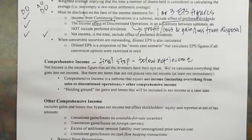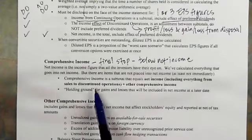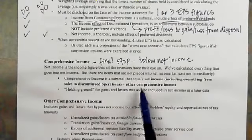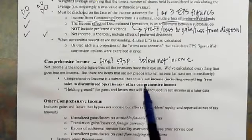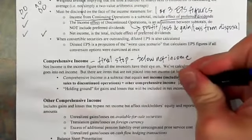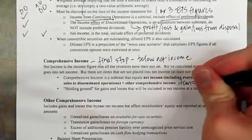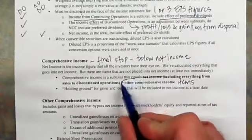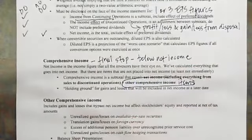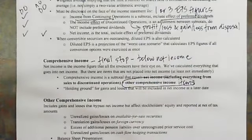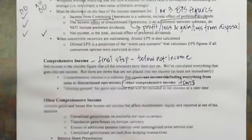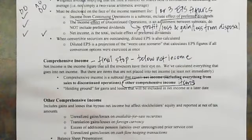Comprehensive income is net income — everything from sales to discontinued operations — plus other comprehensive income items. These other comprehensive income items represent a holding ground for gains and losses that will be included in net income at a later date.